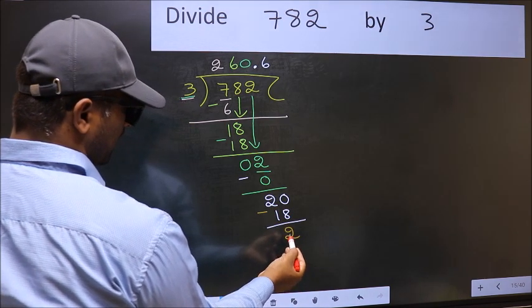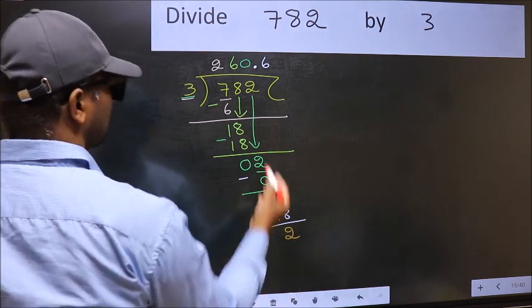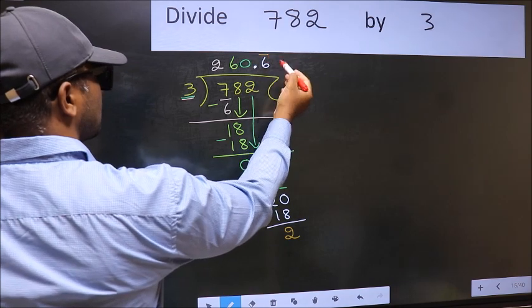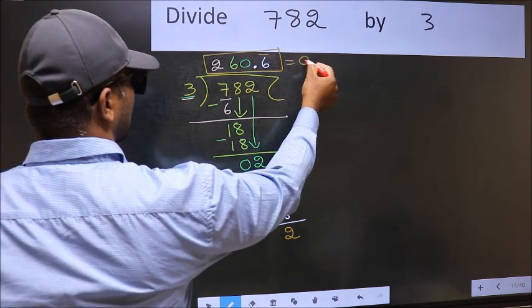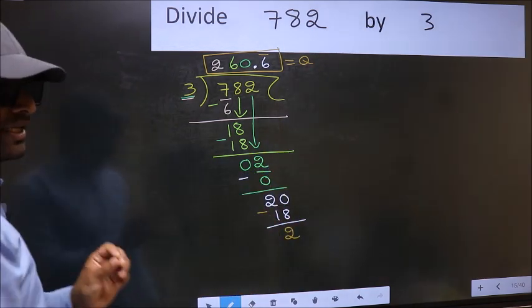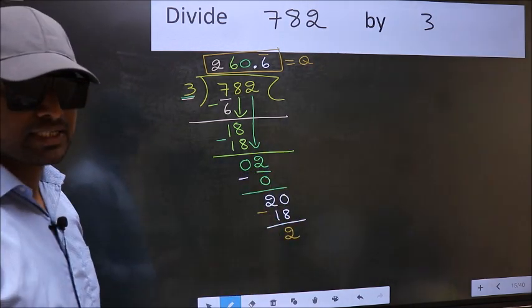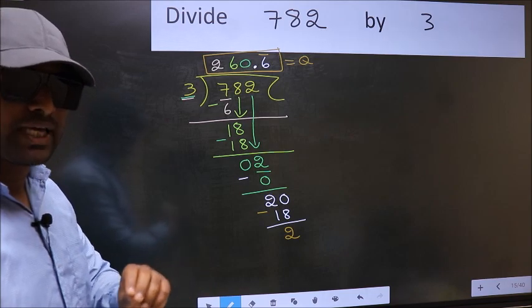We got 2 again. That means we get bar on this number. So this is our quotient. Did you understand where the mistake happens? You should not do that mistake.